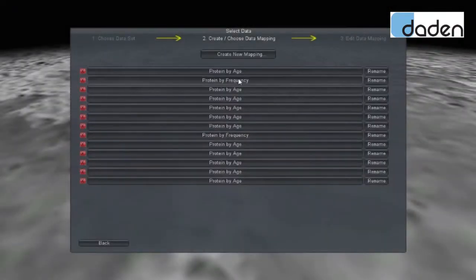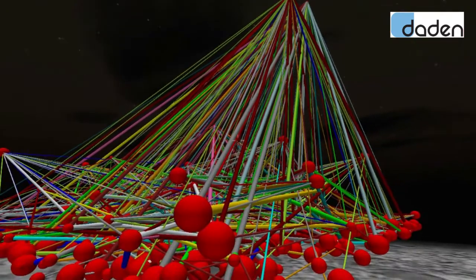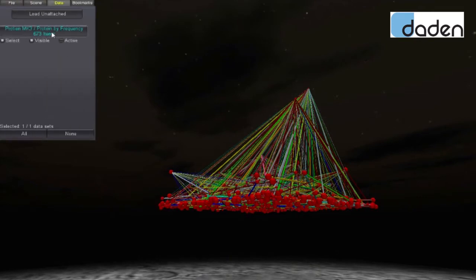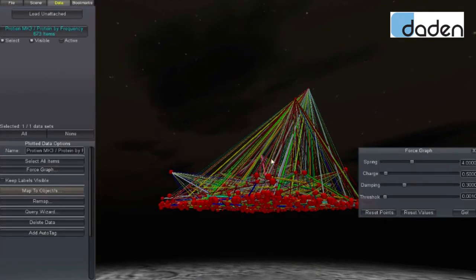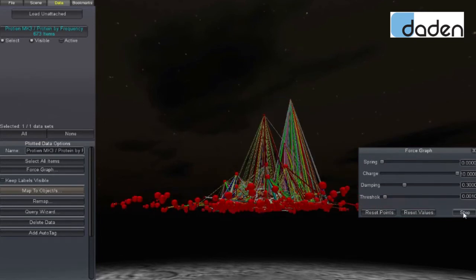In another example, Datascape shows thousands of interactions among 675 proteins in plants. A protein's vertical position defines the number of interactions for that protein. Note that around the edges, there are many proteins that do not interact with any other proteins.